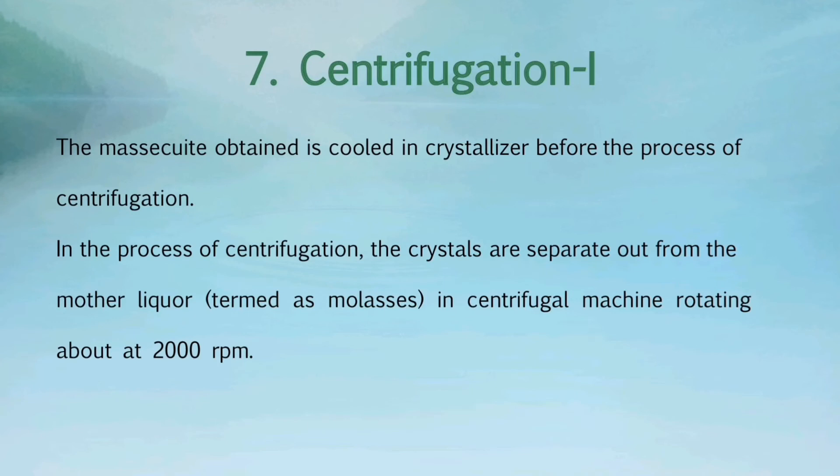The next process is centrifugation. The massecuite obtained is cooled in a crystallizer before the process of centrifugation. In the process of centrifugation, the crystals are separated out from the mother liquor, termed as molasses, in a centrifugal machine rotating at about 2000 revolutions per minute.